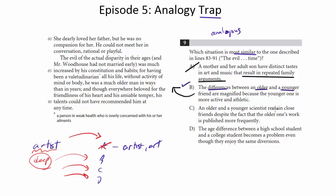C, an older and younger scientist remain close friends despite the fact that the older one's work is published more frequently. Again, we've got the older and the younger, which is good. But it says that they remain close friends. The opposite is being said here, that they're just not that close because of the age difference. So we can get rid of C.